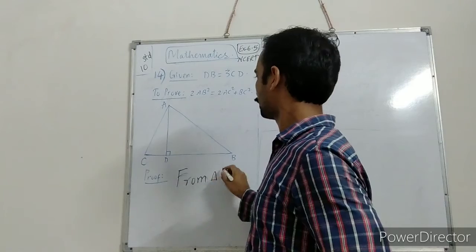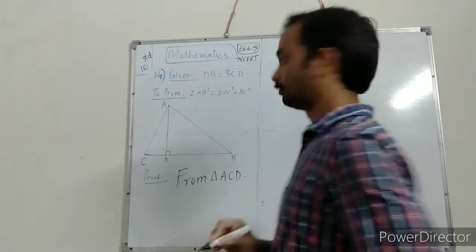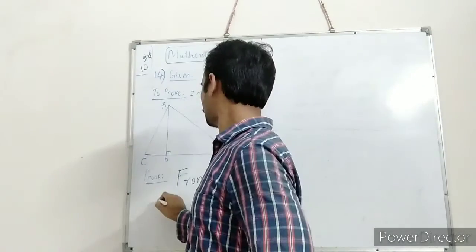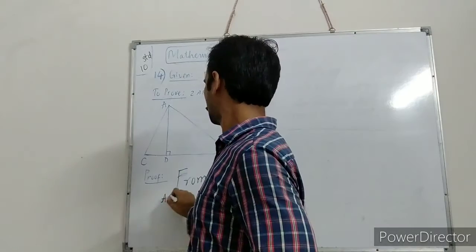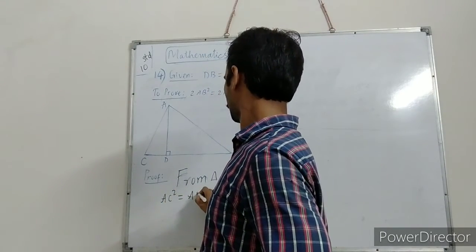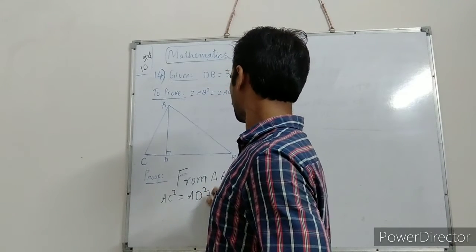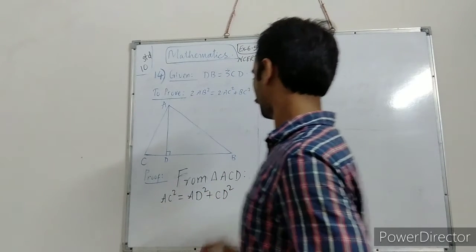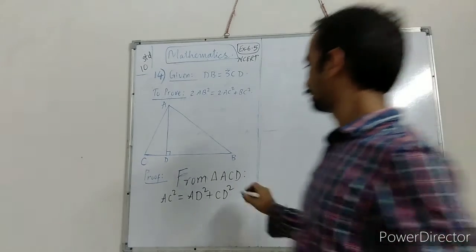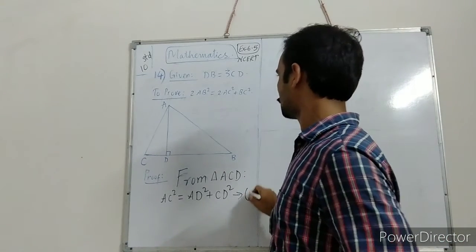From triangle ACD, ac square is equal to ad square plus cd square. Let us take this as equation number 1.